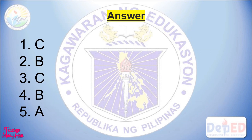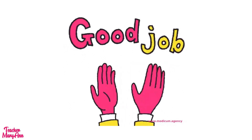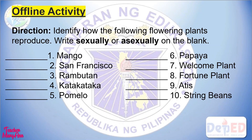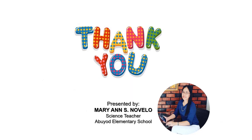Alright, let's check your work. Who got five? Okay, good job — congratulations, you have completed our lesson for today. For your offline activity, identify how the following flowering plants reproduce — write sexually or asexually on the blank. Thank you, kids. I hope you learned a lot today. This is Teacher Marianne saying goodbye and enjoy the rest of your day.